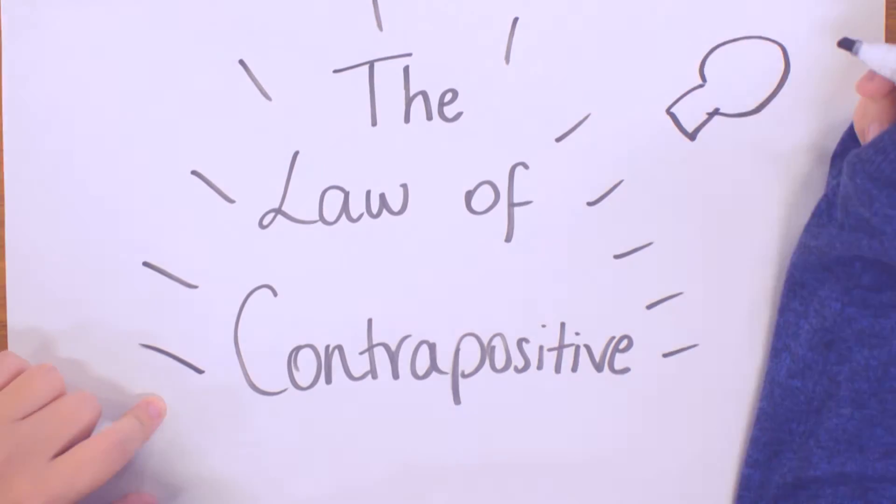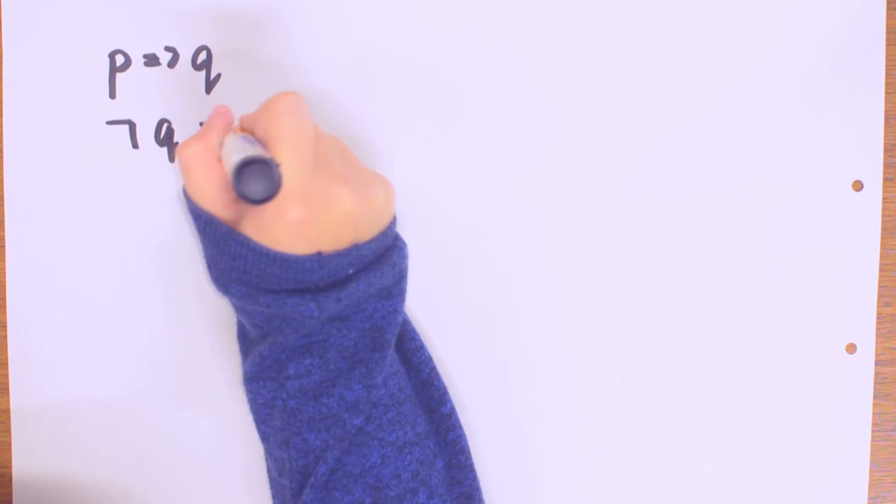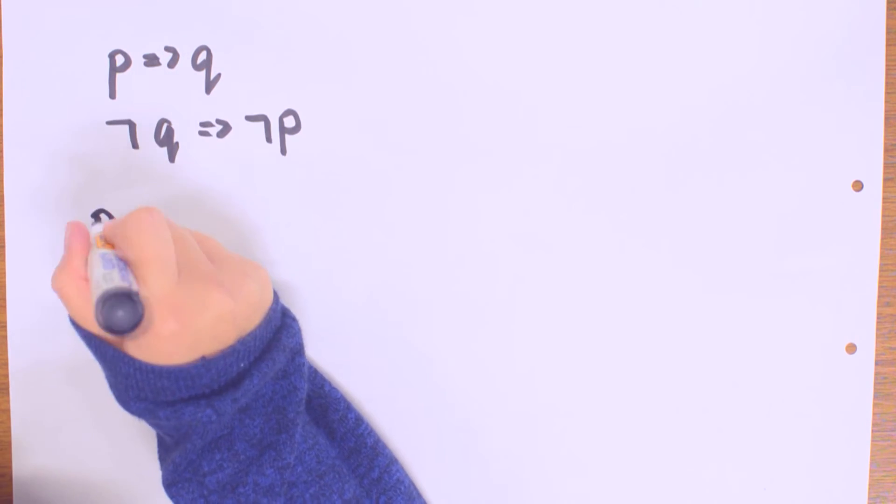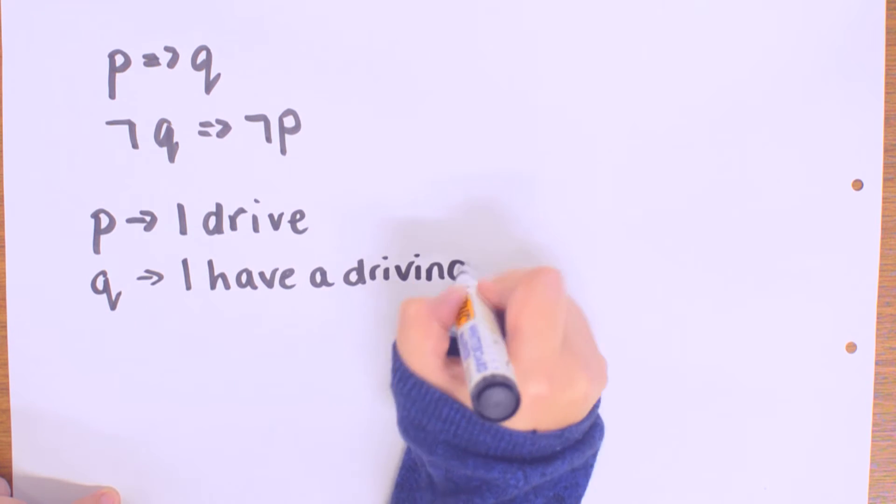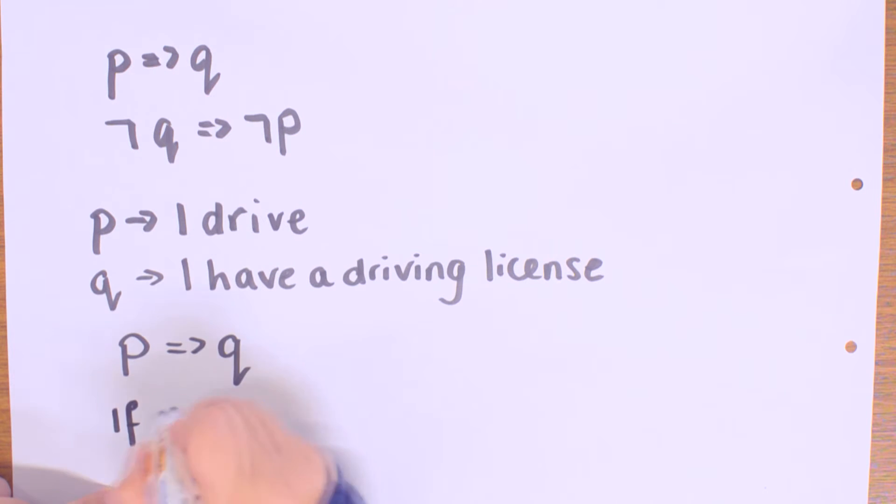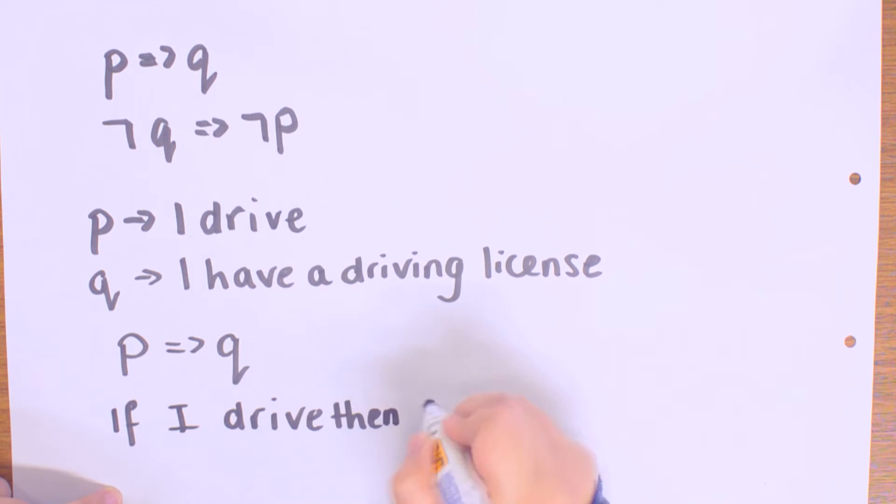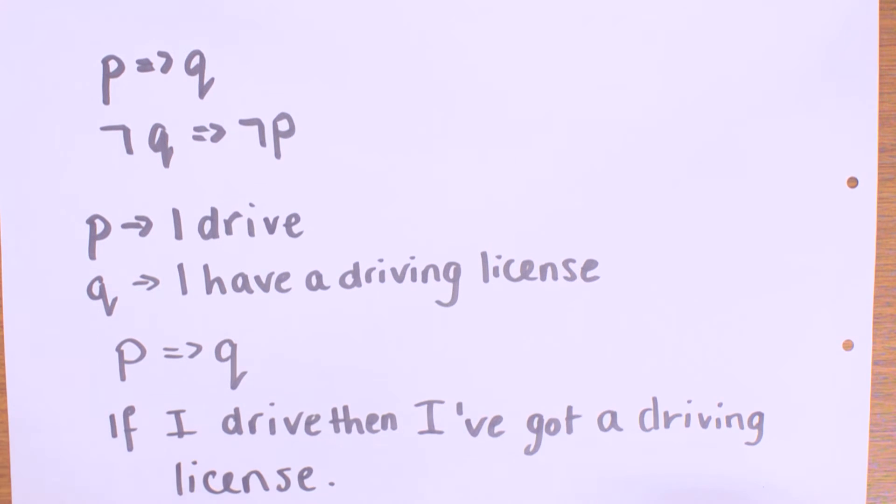What is the law of contrapositive? Let's take an example. Take P to be 'I drive' and Q to be 'I have a driving license'. Let's assume P implies Q: if I drive then I've got a driving license. We're accepting this to be true.